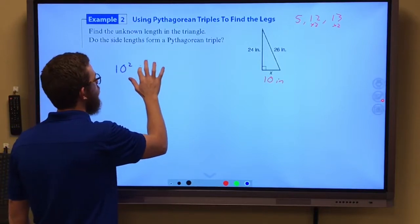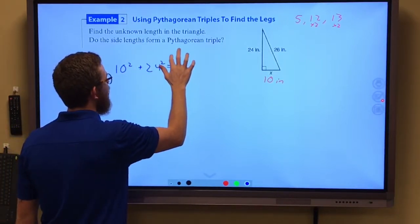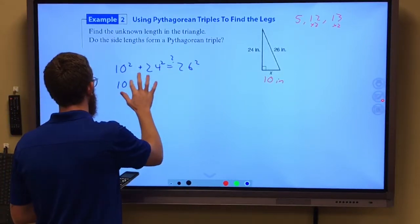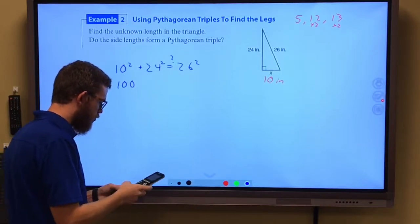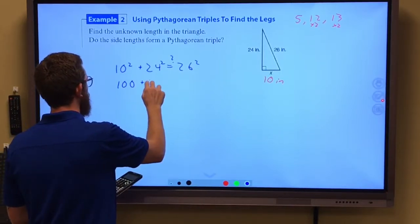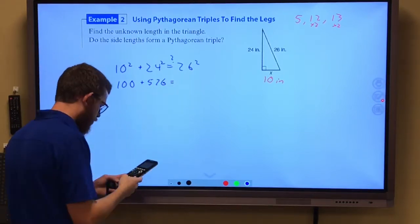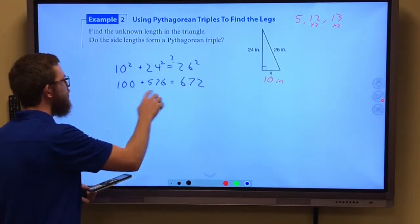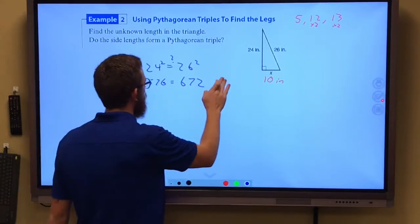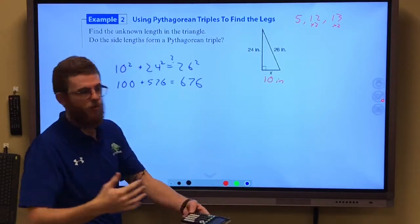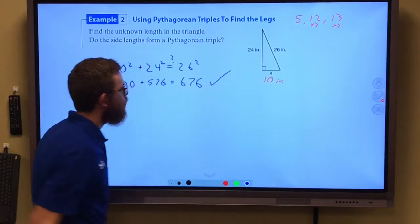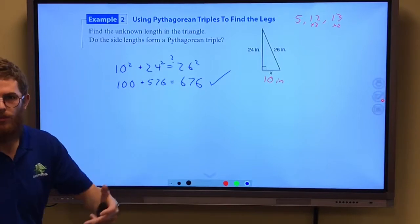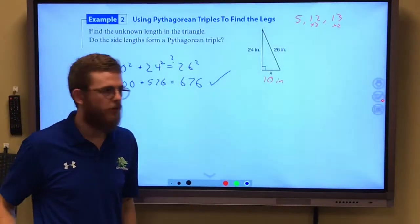10 squared plus 24 squared. Is that going to give us 26 squared? Of course, 10 squared is 100. 24 squared gives us 576. And 26 squared gives us 676. If we do this, 100 plus 576 is 676. Yes, this is confirmed, Pythagorean Theorem confirmed. What we were already expecting because of our Pythagorean Triple.